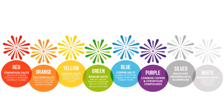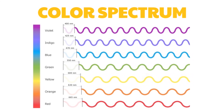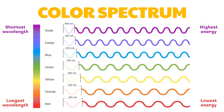Firework effects are produced by the combustion of explosive materials present in fireworks. These explosive materials are also called metal salts. Metal salts emit a characteristic color of light when heated. Each color of light has a specific wavelength. Among the visible light, red light has the longest wavelength and has the lowest energy, while violet light has the shortest wavelength and has the highest energy.